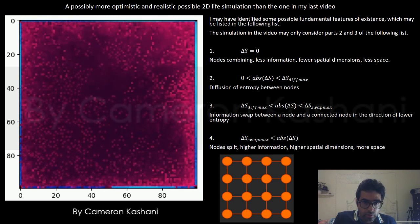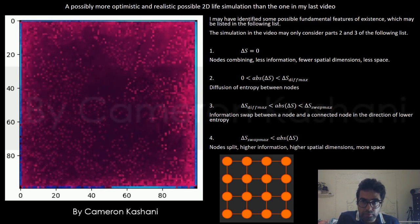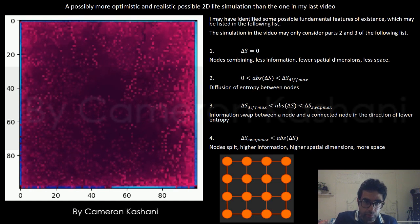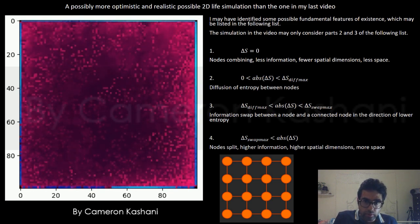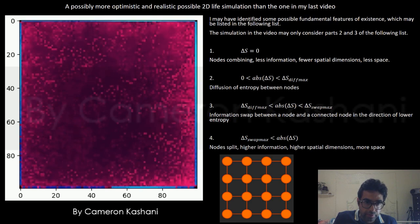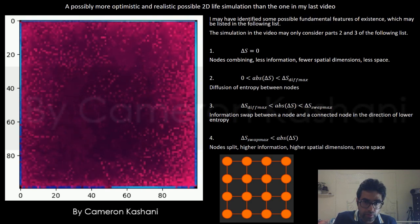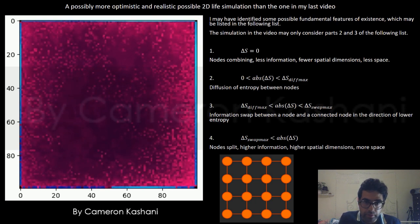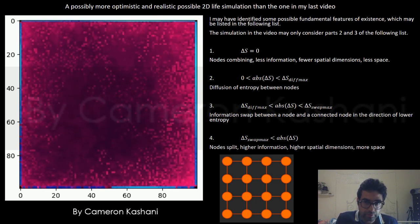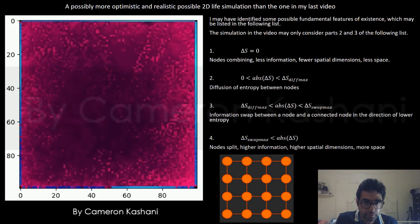So in terms of part 1, at an entropy difference between two nodes of 0, it may be that nodes combine which may result in less information, fewer spatial dimensions and less space.